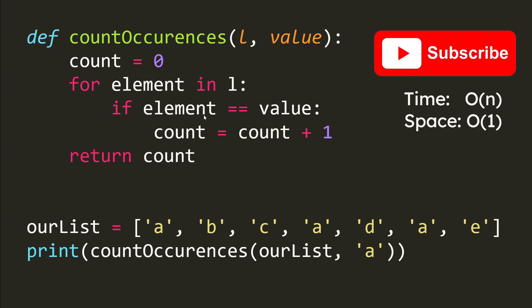If the element that we're at is equal to the value, then we increment count. At the very end of the for loop we simply return the count. The runtime is O(n) because we just traverse through the loop once, and the space is O(1) because we're not creating any new space.